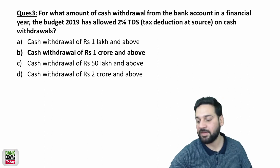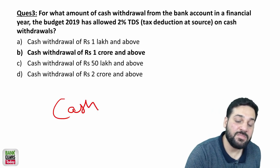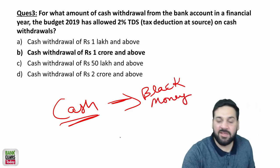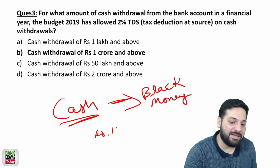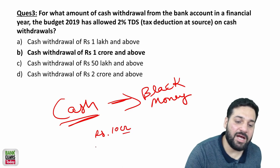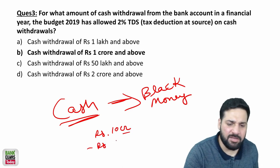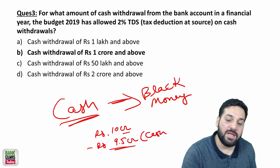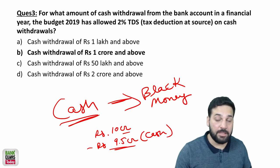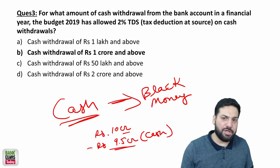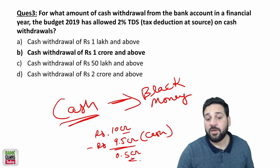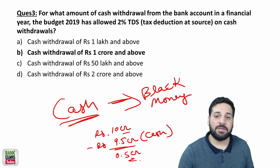Cash transactions equal black money in the economy. For example, if I'm making online sales of say 10 crore rupees, and during the year I withdraw 9.5 crore rupees as cash and tell the income tax department that this is cash expenditure — a lot of big companies are doing this: withdraw the cash and mention it as cash expenses, so their declared income is just 0.5 crore. To avoid such circumstances, the Union Budget has addressed this.